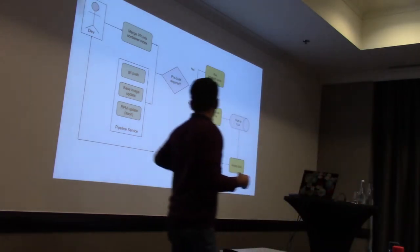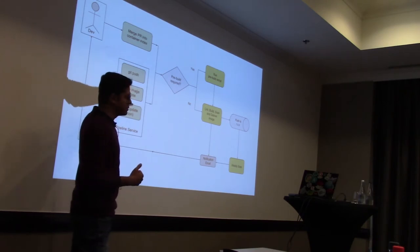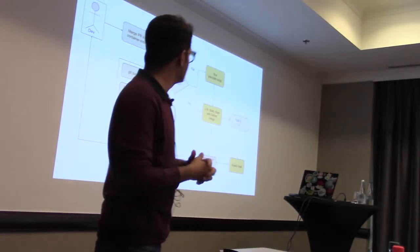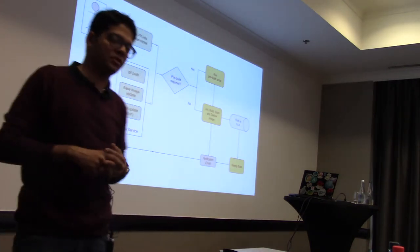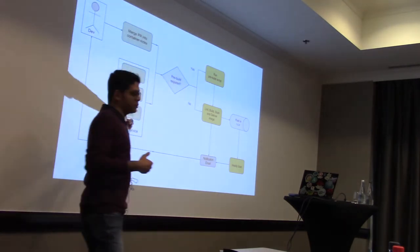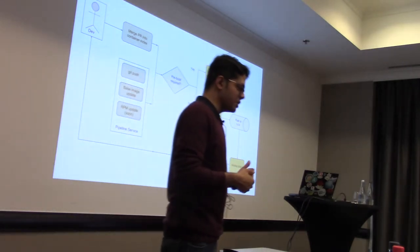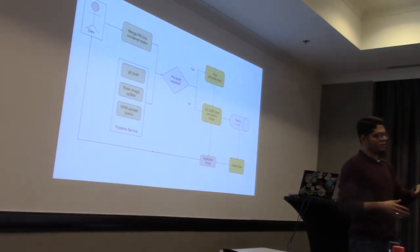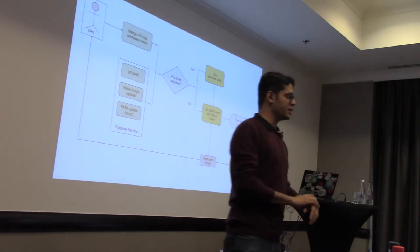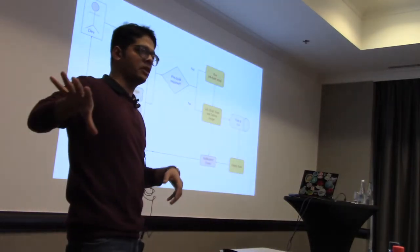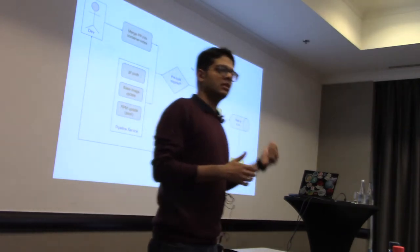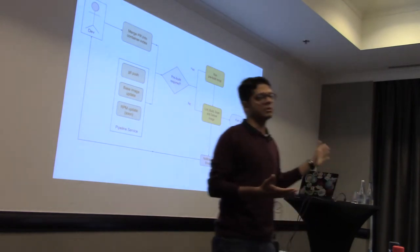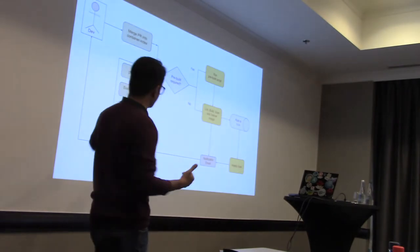Besides that, what else does the pipeline service do? Every time a git push happens, a base image is updated — and there's also RPM update triggering. This is something we had in the previous iteration presented at DevConf CZ 2018. We don't have it right now due to bandwidth, but we are planning to work on it if the community is interested. What used to happen was that every time an RPM is updated in any of your configured repos and that RPM is present in your container image, we trigger a rebuild — effectively invalidating the RPM update scan we ourselves perform and keeping your container images current from an RPM update point of view.